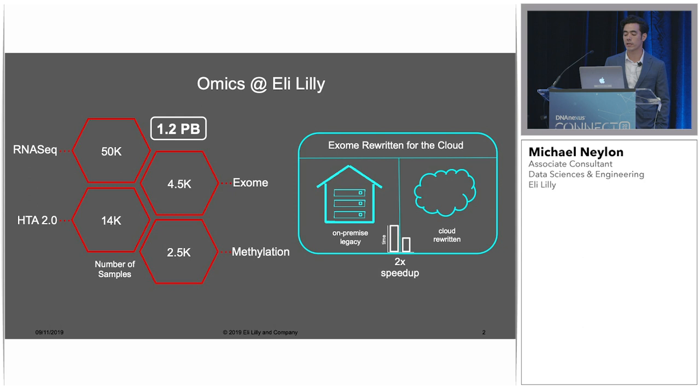In addition, our on-prem infrastructure is not growing exponentially like the data, so we also need that on-demand compute in the cloud, which DNA Nexus helps with as well. Our first pipeline that we ported onto DNA Nexus, we got a two-time speed-up just by getting that on-demand compute and that consistent compute environment.